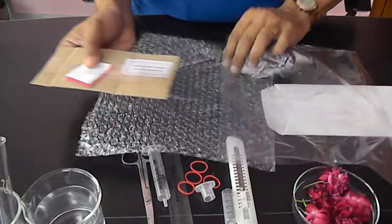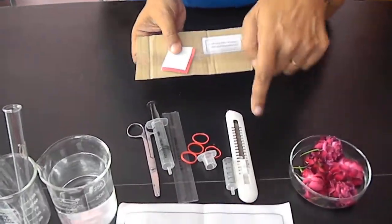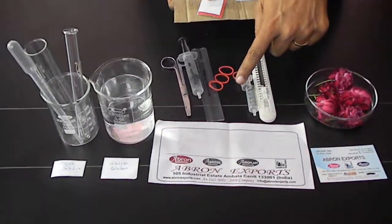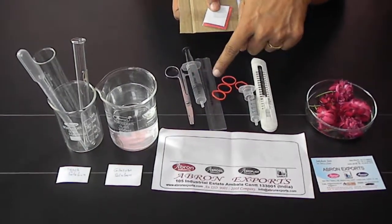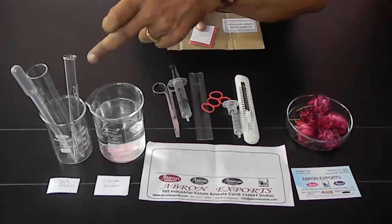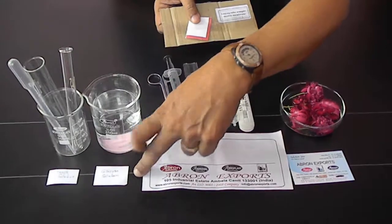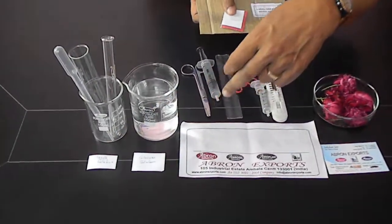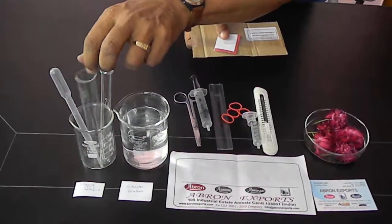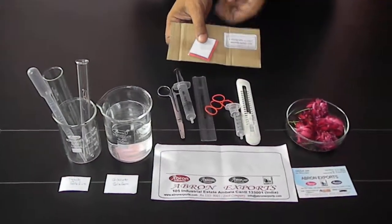What you need are simple things to perform the experiment: one cutter, two syringes, one scale, and two solutions - glucose solution and starch solution - and one big test tube and dropper. These are the things you need for the experiment.